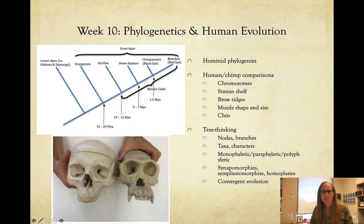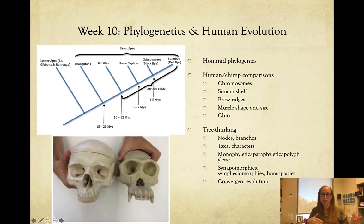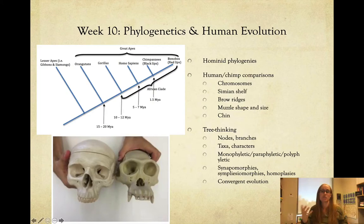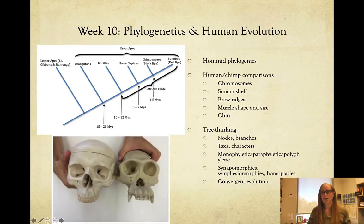Week ten we got into more phylogenetics, looking at tree thinking, and we talked about human evolution — differences between humans and chimps in chromosomes, simian shelf versus chin, brow ridges, muzzle shape and size. You need to be able to read a tree: looking at nodes and branches, mapping characters, making monophyletic versus paraphyletic or polyphyletic groups, synapomorphies versus plesiomorphies (the ancestral state), and homoplasy with convergent evolution. There's a great tree-thinking assessment activity to practice.